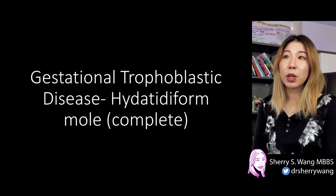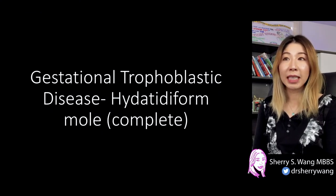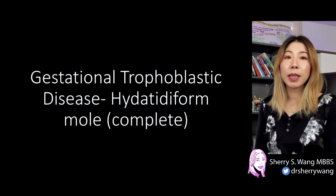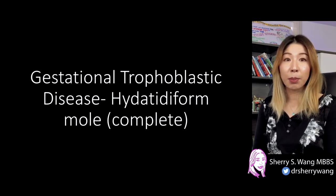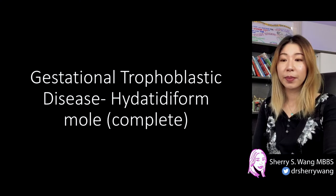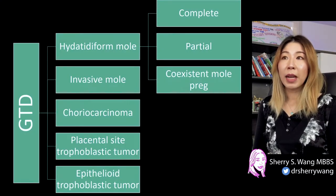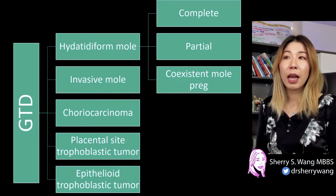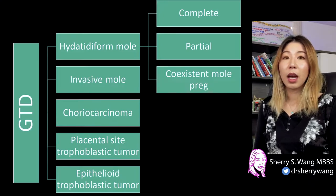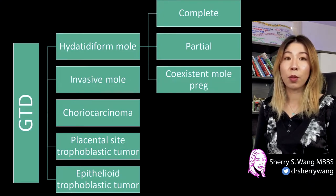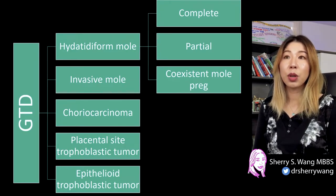So today we'll be talking about gestational trophoblastic disease and in this particular case we see a complete mole. Gestational trophoblastic disease is really an umbrella term and it encompasses a lot of different entities. The one we are most aware of is the hydatidiform mole, and these can be complete, partial, or coexistent with a pregnancy.